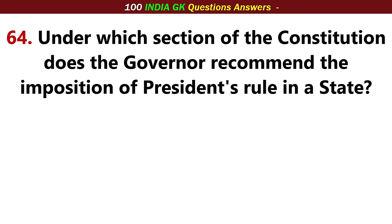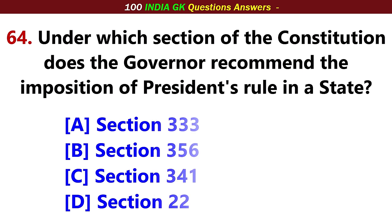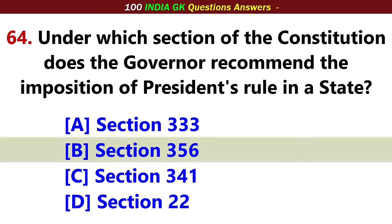Under which section of the constitution does the governor recommend the imposition of President's Rule in a state? Answer: Section 356.